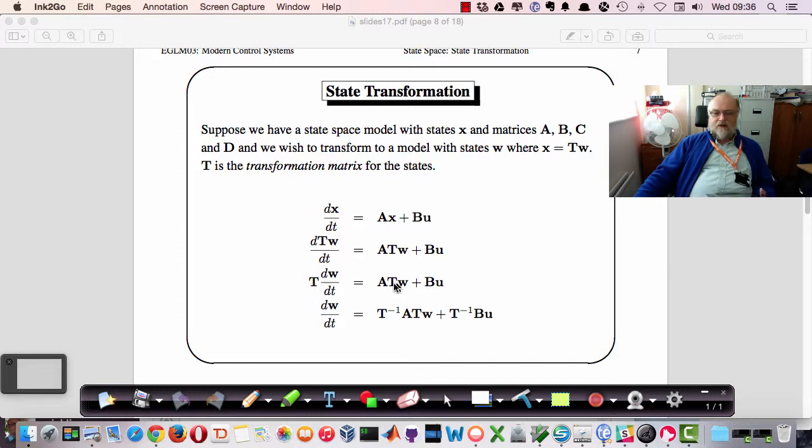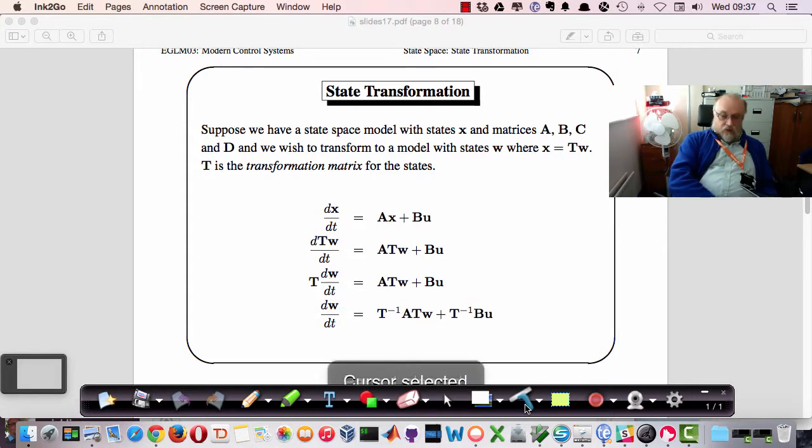We can factor out the T therefore, so we get T dw by dt is ATw plus Bu. And if we then pre-multiply by that T, the inverse of T, effectively dividing by T in matrix space, then dw by dt is T minus 1 ATw plus T minus 1 Bu. And this equation here is a new system matrix with the states equal to w. So we can always transform one set of state equations into another set of state equations by doing this simple transformation, T minus 1 AT. And of course the T minus 1 also affects the B matrix as we've shown there.